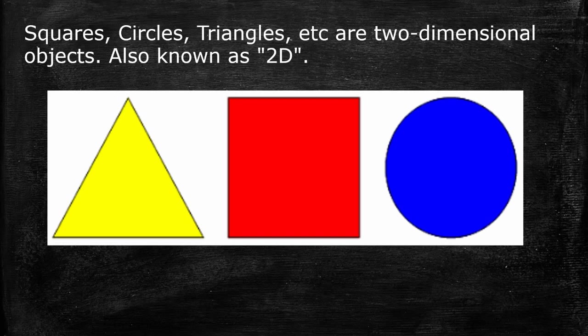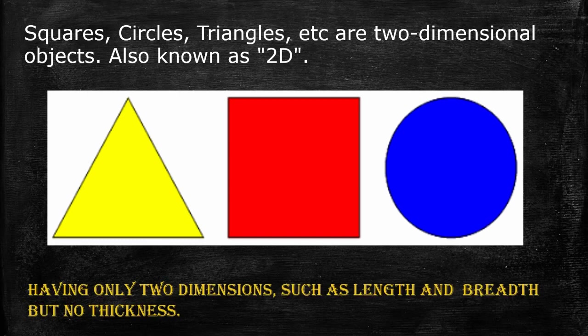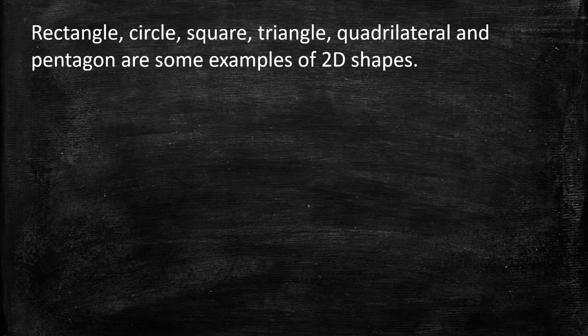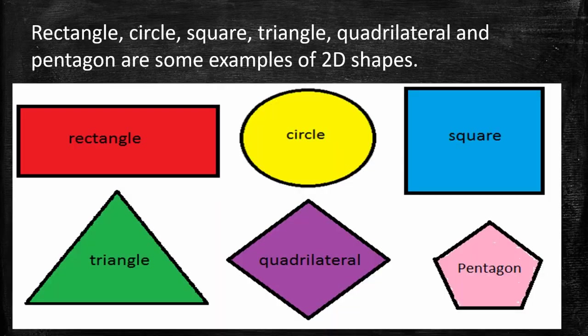These objects are also known as 2-D. So square, circle and triangle have only 2 dimensions — length and breadth — but no thickness. Rectangle, Circle, Triangle, Quadrilateral and Pentagon are some more examples of 2-D shapes.